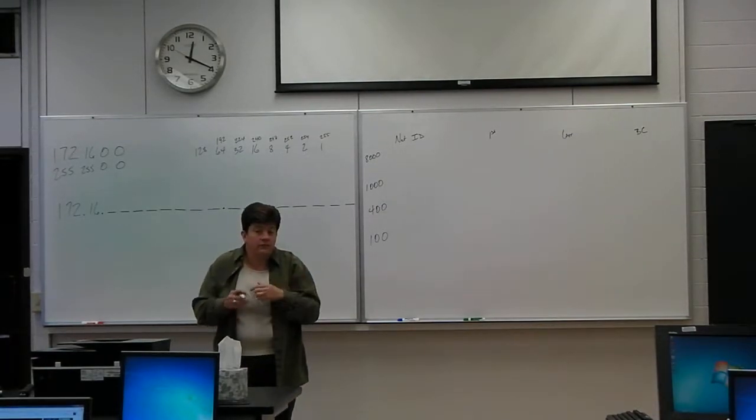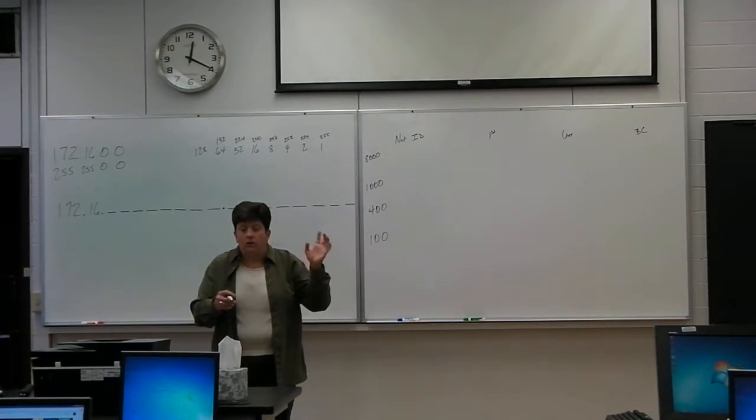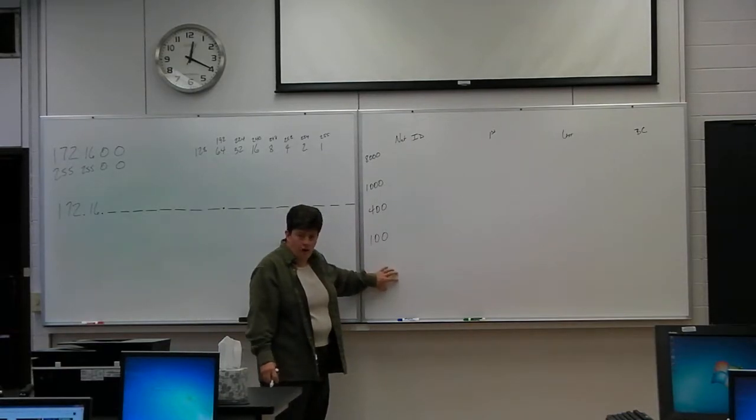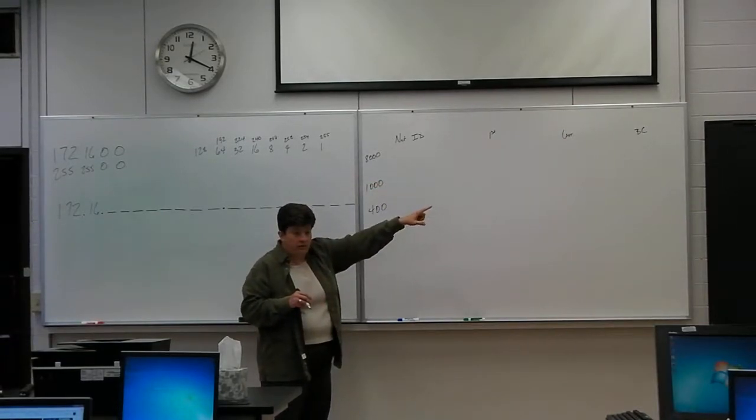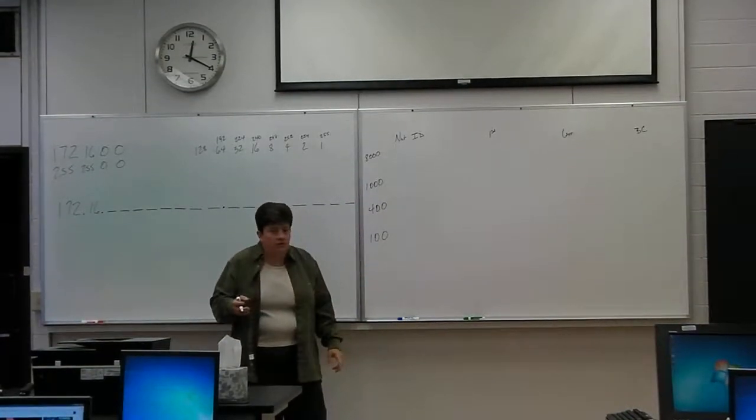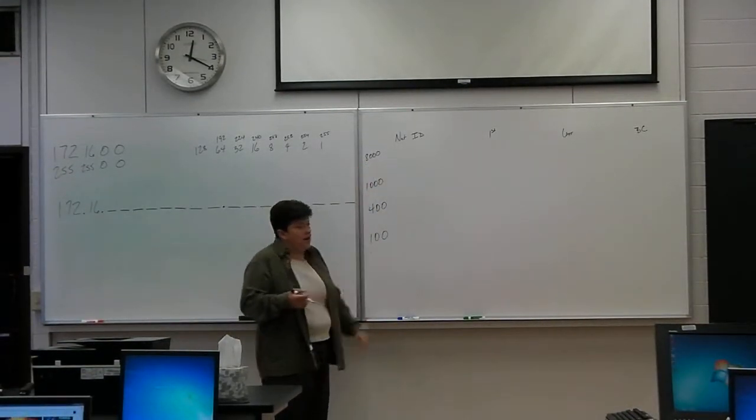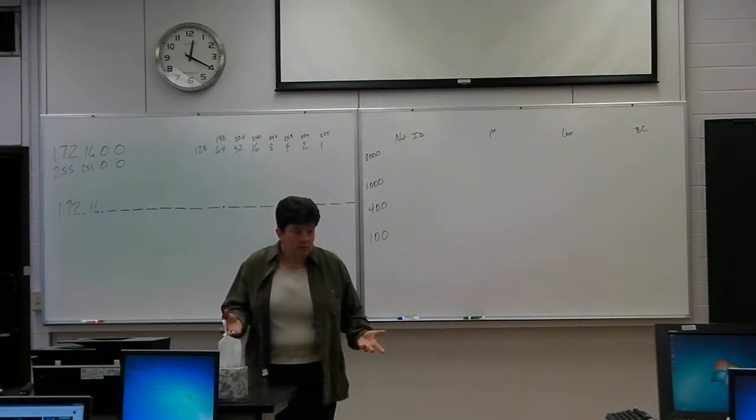Also if you remember in classic subnetting we weren't allowed to use the zero subnet, so we added two to compensate for the addresses we were going to throw away. Remember that we're doing this only from the perspective of hosts. I'm still going to have two addresses I throw away, the network ID and the broadcast. What I'm going to do is I'm going to use big round numbers like this. You've asked for 8,000 hosts, 8,002 is not really that big a deal.